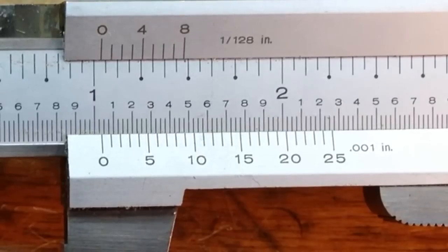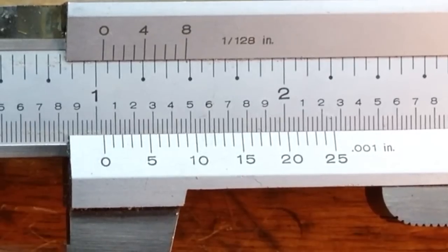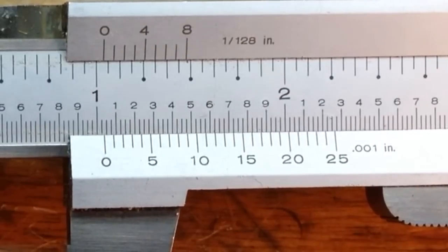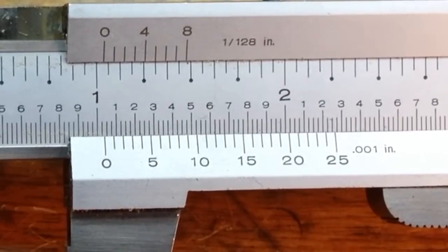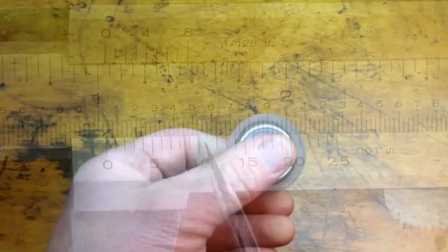You can see that the nine matches up on the sliding scale with the fixed scale, so we have to do a little bit of math now. We know it's at 1.025, and then we add in the .009, and we come up with a measurement of 1.038 on this one.